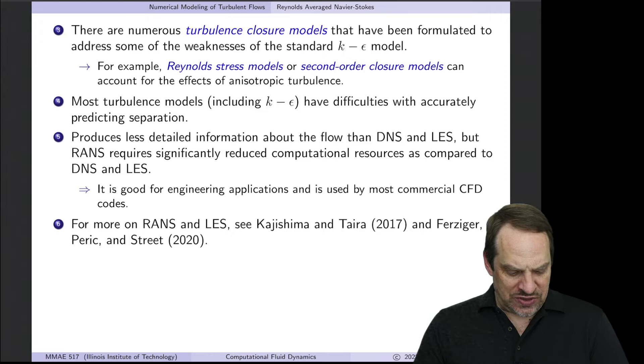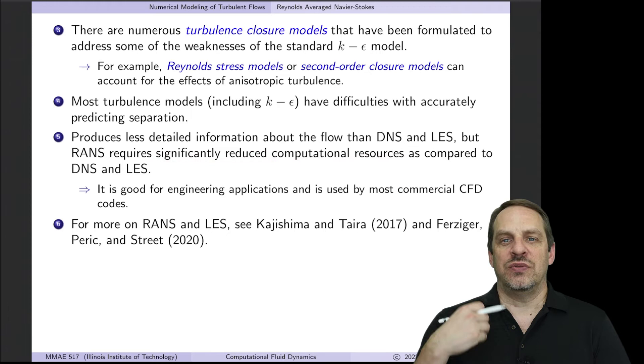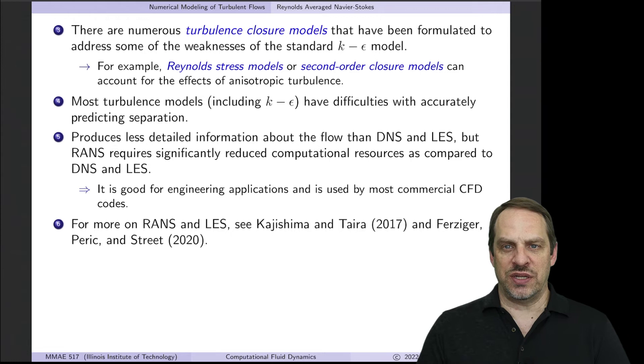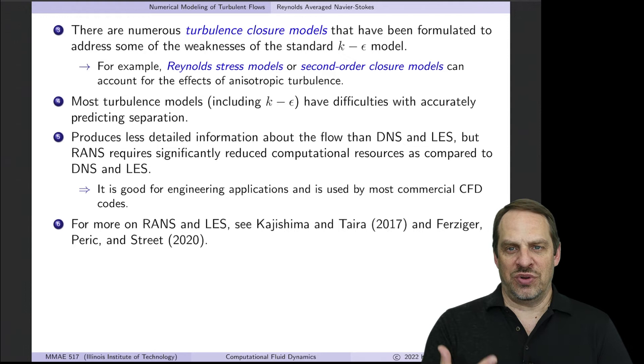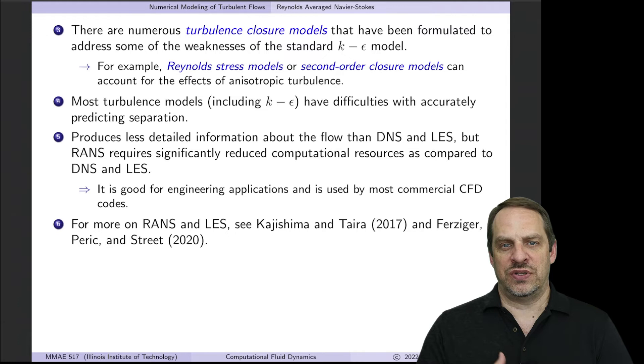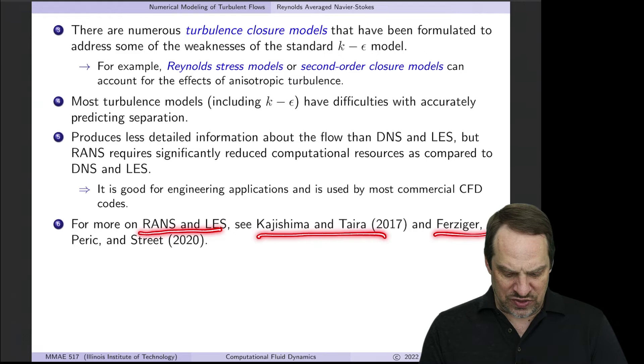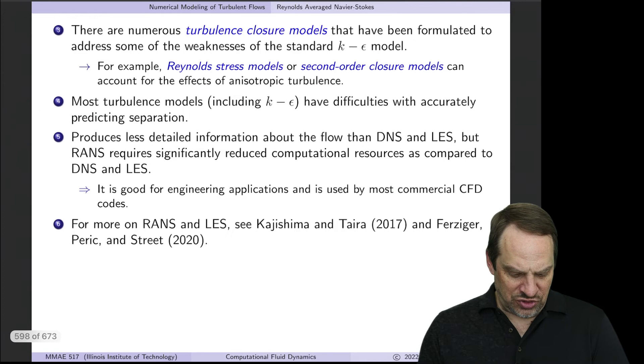But the whole point, and this is why they're still the most popular turbulence models used, is that it requires significantly reduced amounts of computational resources by orders of magnitude as compared to LES, and even more so as compared to DNS. In industry, when you need results relatively quickly and you can relax a bit on accuracy requirements, these models are often perfect for industrial applications. If you want to learn more about RANS and LES, here are a couple of books I would encourage you to take a look at.